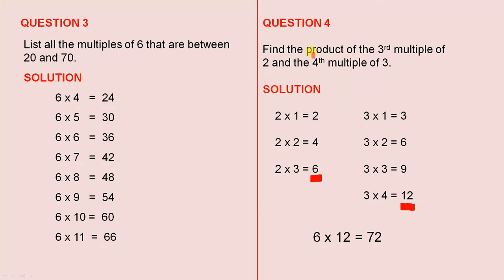Now product—students would have to know that the word product means multiplication. So 6 × 12 gives us 72. So there's the answer.